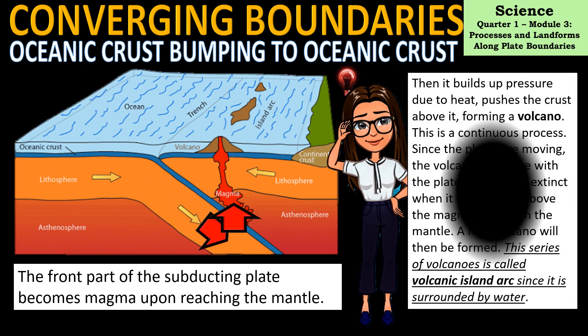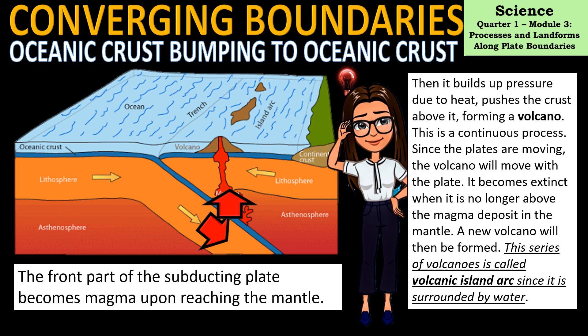The magma builds up pressure due to heat and pushes the crust above it, forming a volcano. Since the plates continue moving, the volcano moves with the plate and becomes extinct when it is no longer above the magma deposit in the mantle. A new volcano is then formed in its place. This series of volcanoes is called a volcanic island arc since it is surrounded by water.